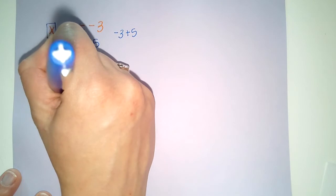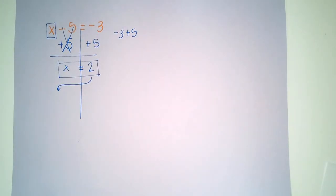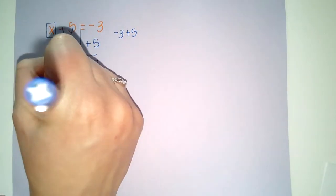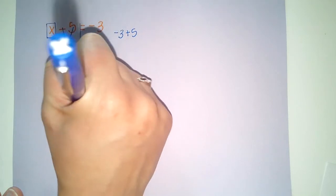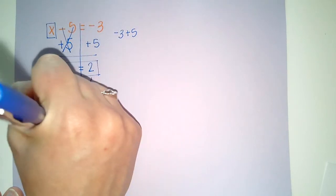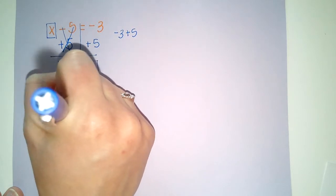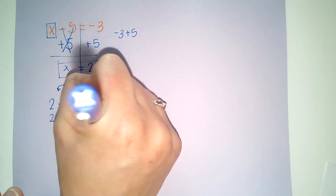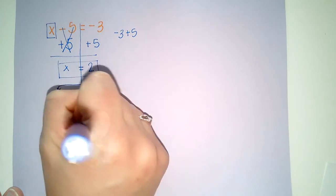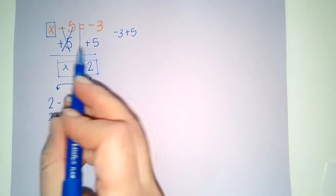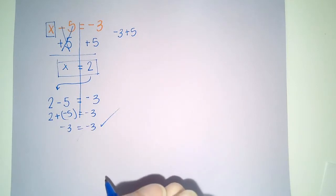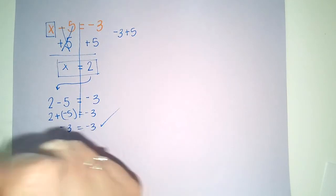But I'm going to take that 2 in step number four and check my work. 2-5=-3. 2+-5=-3. -3=-3. Check. My solution is good.